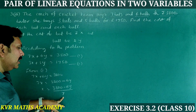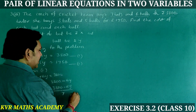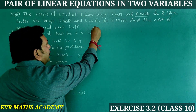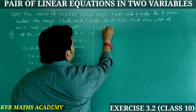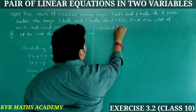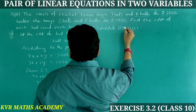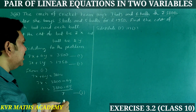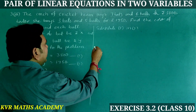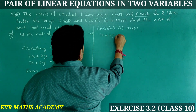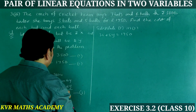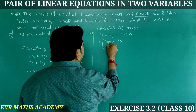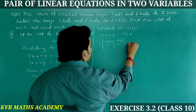This is equation number 3. Now substitute equation 3 into equation 2. Substituting x = (3,800 minus 6Y)/7 into equation 2: 3 × (3,800 minus 6Y)/7 + 5Y = 1,750.